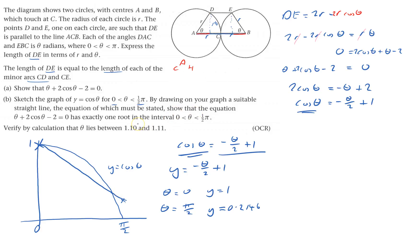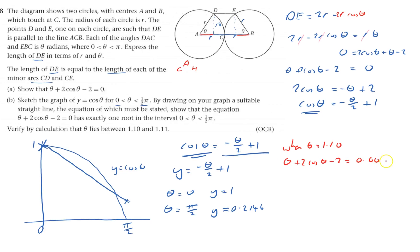I've shown that. To verify the calculation, in red: when theta equals 1.10, I got theta plus 2 cos theta minus 2 equals 0.00719.